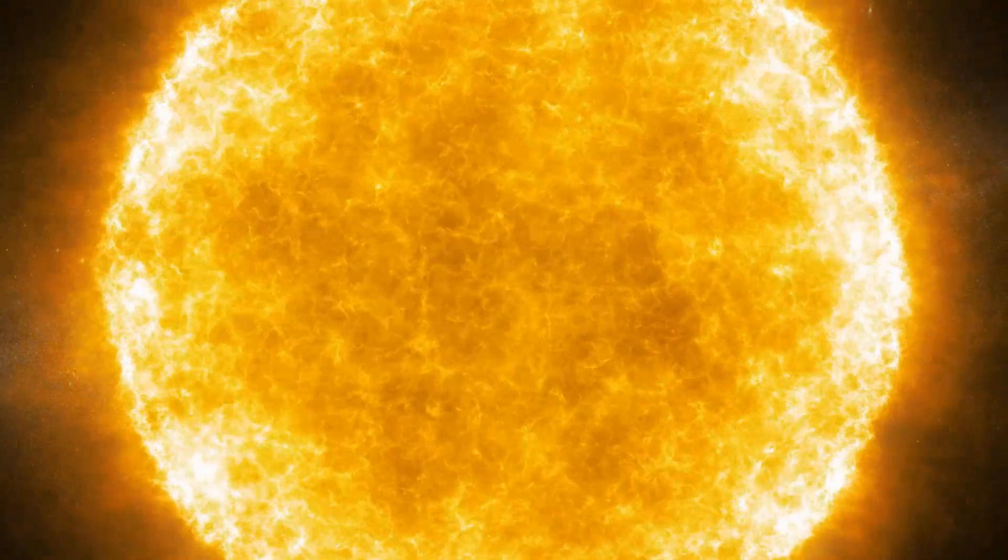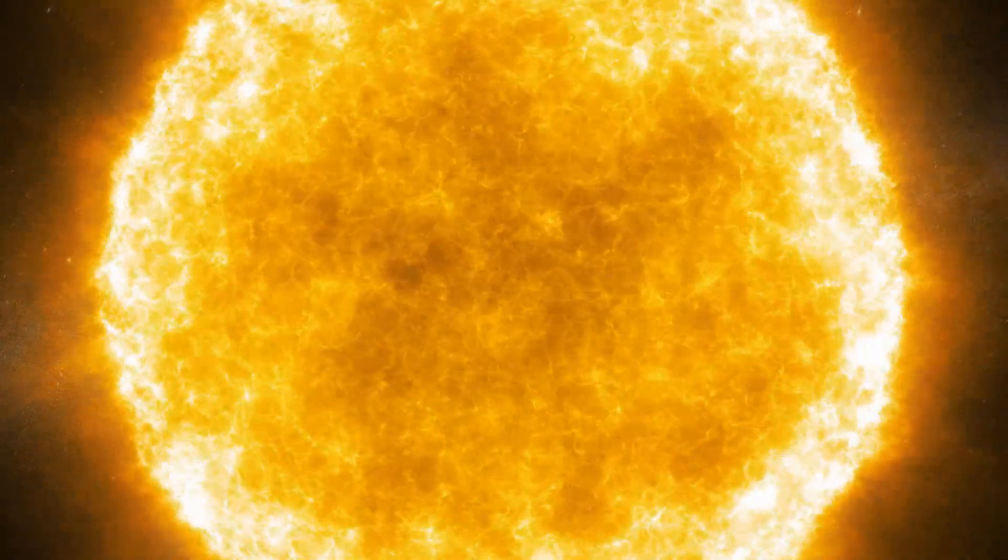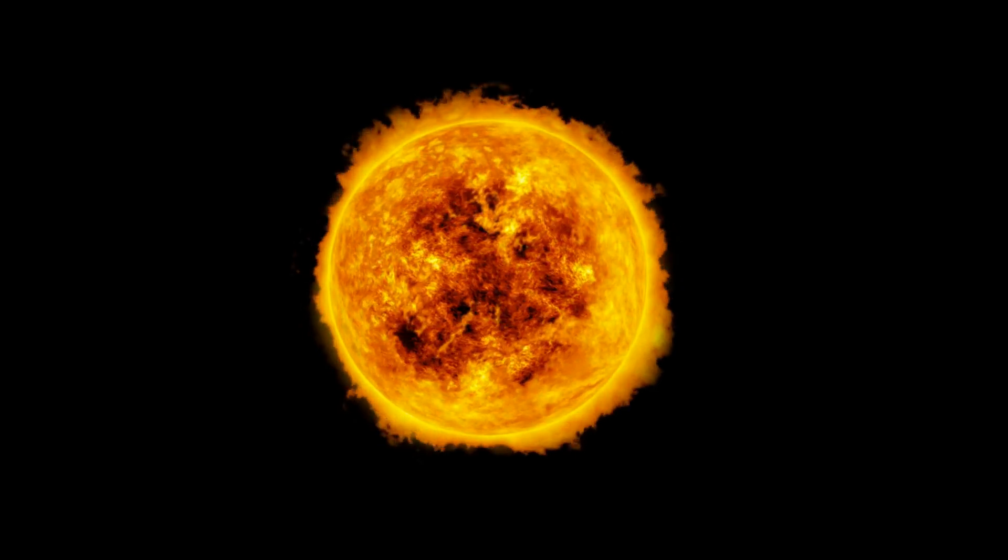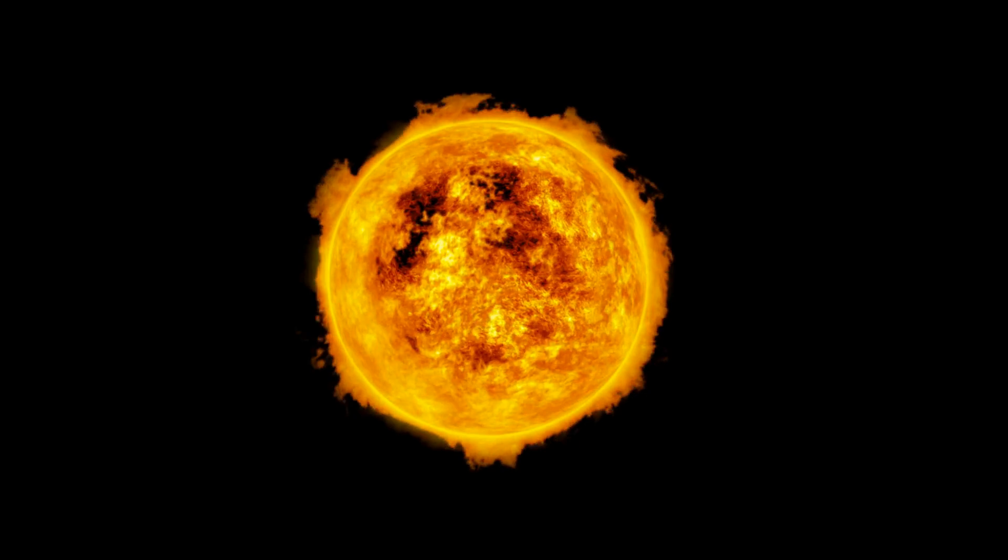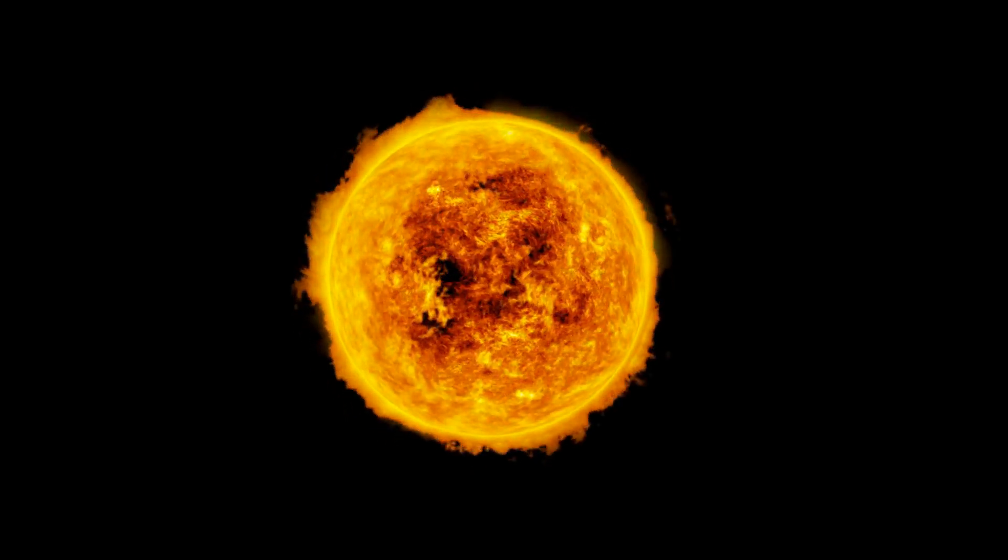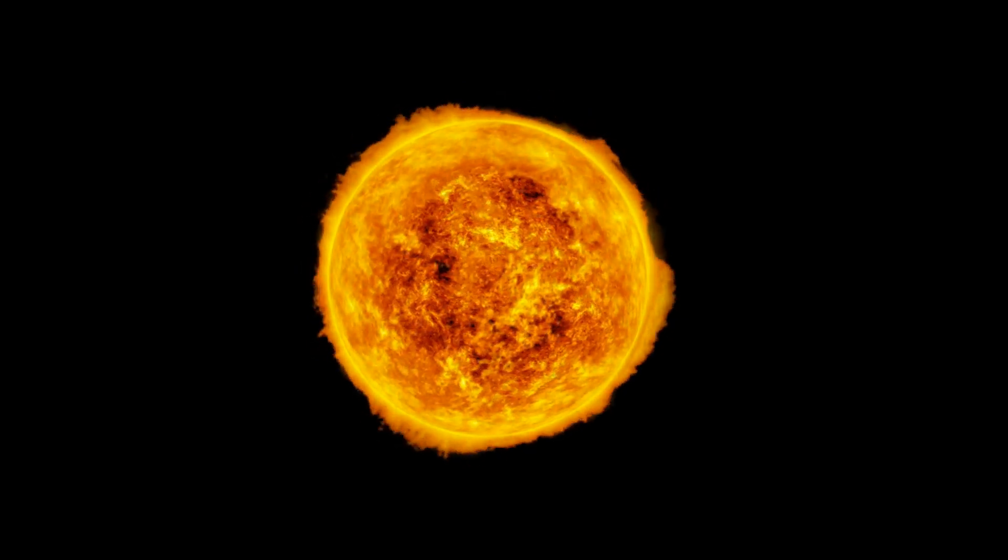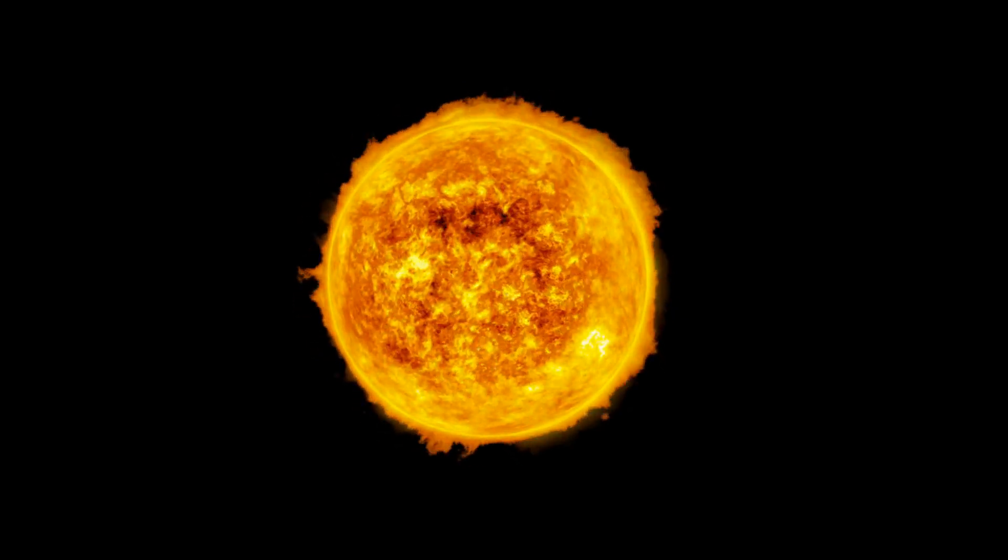Despite its immense size and power, the Sun is just one of billions of stars in the Milky Way galaxy. Its life cycle is a testament to the dynamic nature of the universe, with the Sun eventually evolving into a red giant in about 5 billion years, expanding and engulfing the inner planets, including Earth.